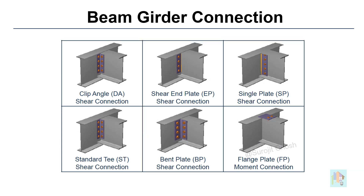Next is the beam-to-girder connection, with single plate, end plate, and clip angle templates. If required, we can re-arrange the position of the connecting member so that the top or bottom flange is at the same level with the girder.